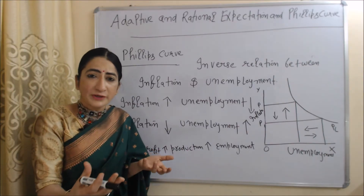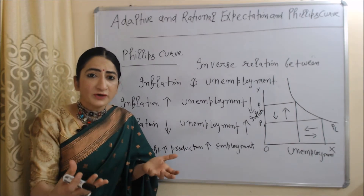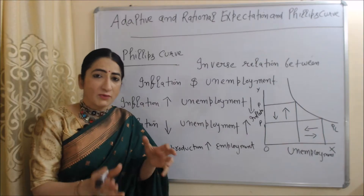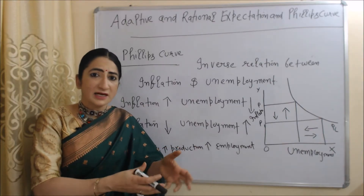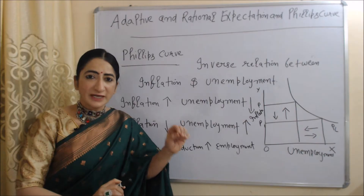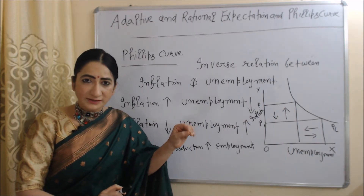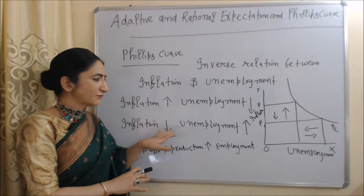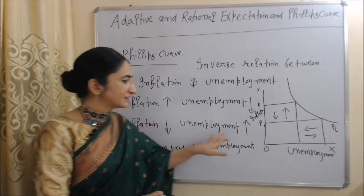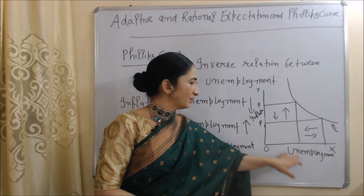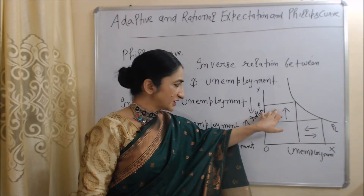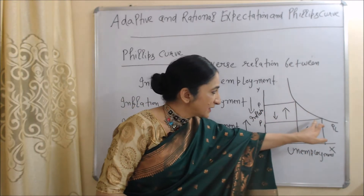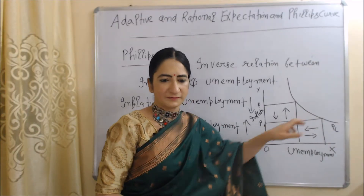As we know, if inflation increases, prices are increasing. If prices are increasing, the profit of the producer is increasing. If profit is increasing, production increases. If production increases, the producer will hire more and more employees, and as a result, unemployment will fall. In this diagram, on the x-axis we have unemployment and on the y-axis we have inflation. This is our Phillips curve.